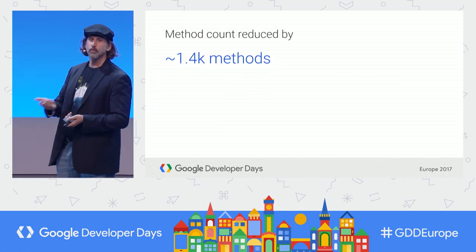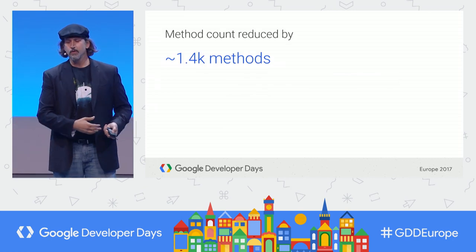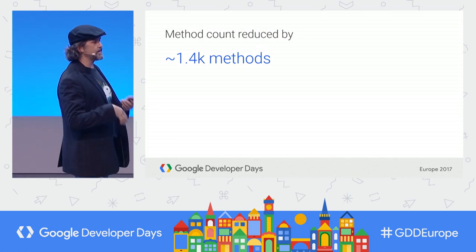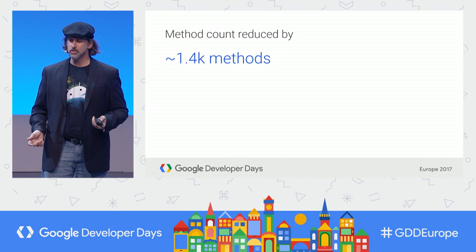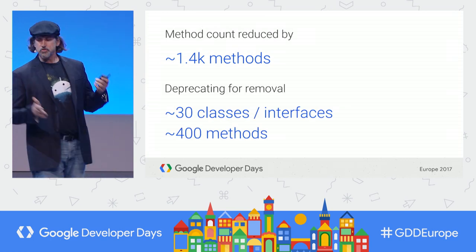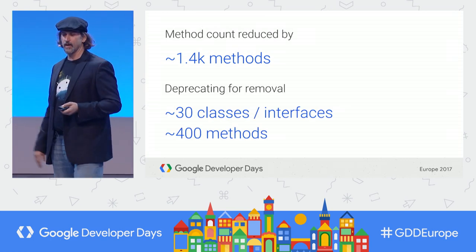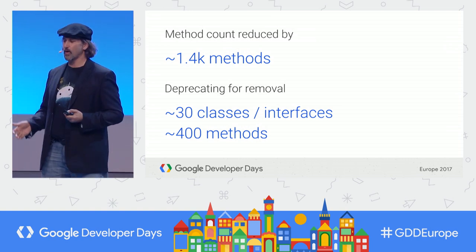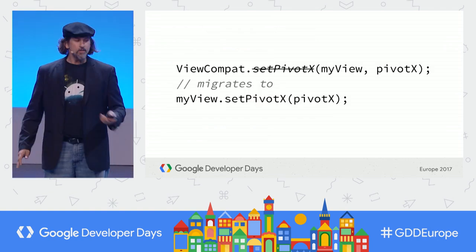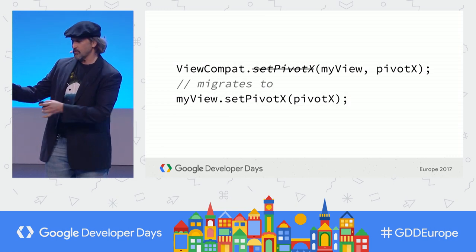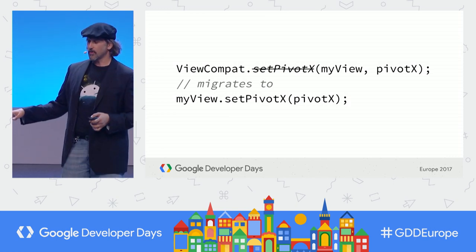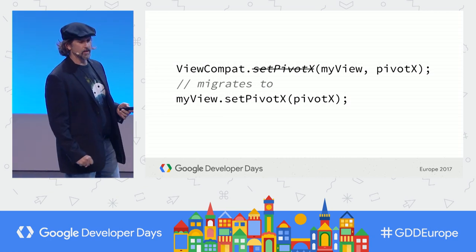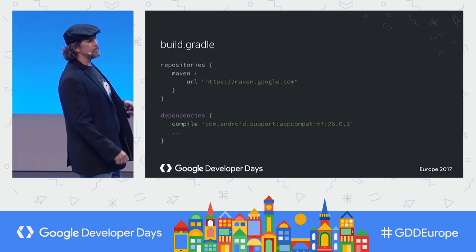Dropping API 14 gives us a bunch of benefits. We removed over 1,400 methods. Remember, we still have a 65K method dex limit on APIs less than 21. Our public API surface reduced by 30 classes and 400 methods. You should start getting rid of the deprecated stuff because we're actually going to remove it to make things even smaller.